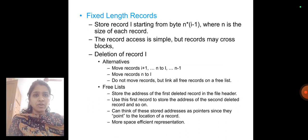Fixed length records: store record i starting from byte n*(i-1), where n is the size of each record. The record access is simple, but records may cross blocks.